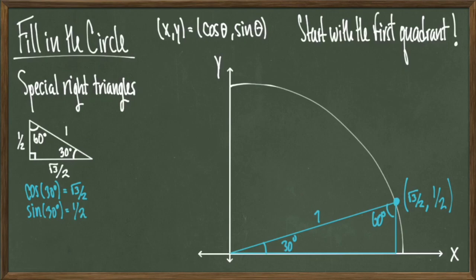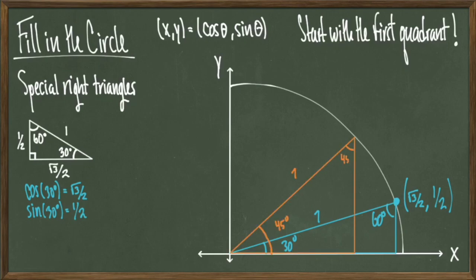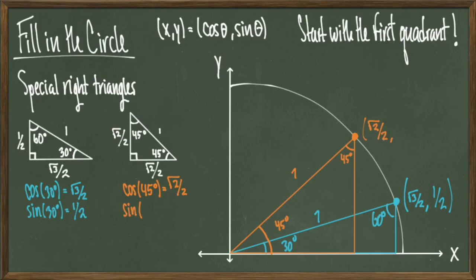If I look at the angle lifted off of the x-axis by 45 degrees, I can inscribe the 45-45-90 triangle. This will have sides root 2 over 2, root 2 over 2, and a hypotenuse of 1. Therefore cosine of 45 degrees equals root 2 over 2, and sine of 45 degrees equals root 2 over 2. This special right triangle makes contact with the unit circle at the point (root 2 over 2, root 2 over 2).